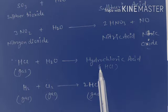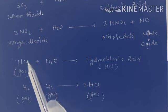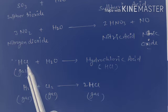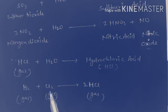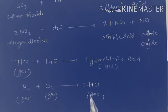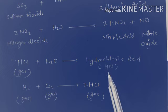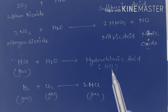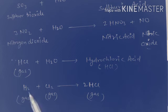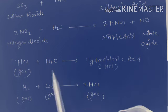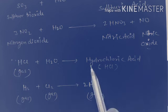To create hydrochloric acid, hydrogen gas and chlorine gas react to form hydrogen chloride gas. Then hydrogen chloride gas dissolved in water gives us hydrochloric acid.